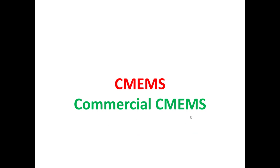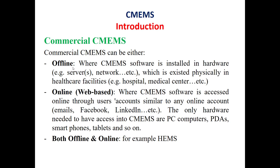We will now talk about the commercial computerized medical equipment management systems. There are three types of commercially available systems: the offline system, the online system, and systems which have both the capability of being online and offline simultaneously. Offline means the CMEMS software is installed on hardware physically located within a healthcare facility such as a hospital or medical center, including servers, network infrastructure, and so on.